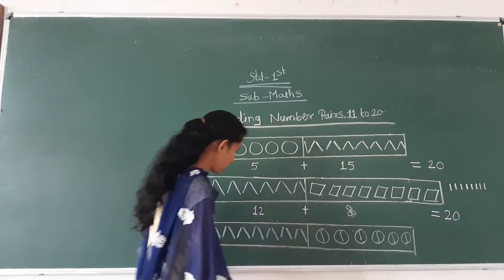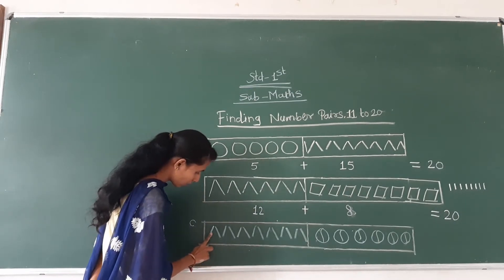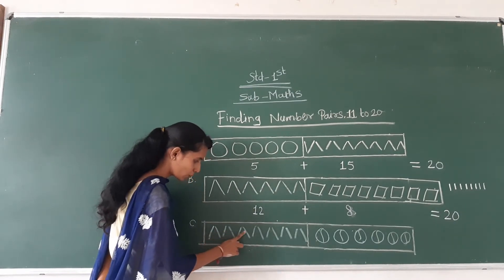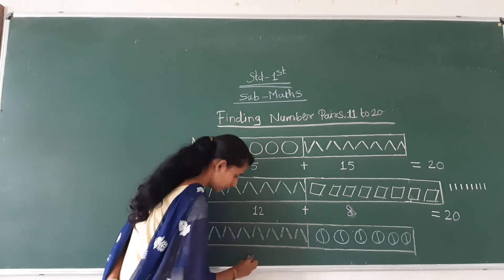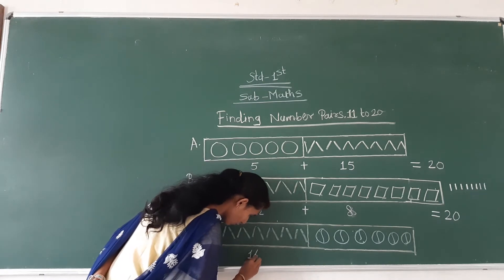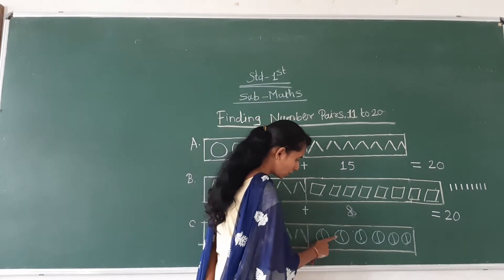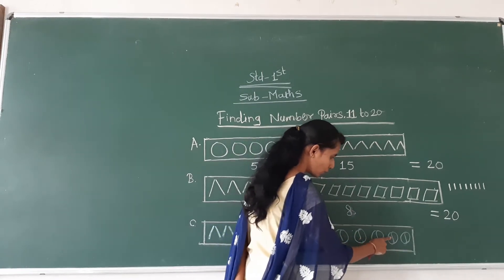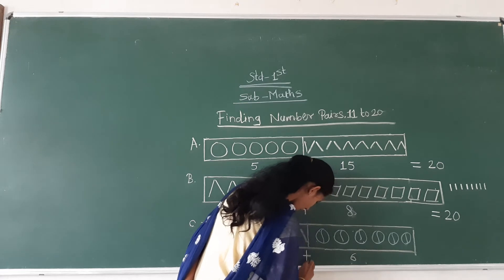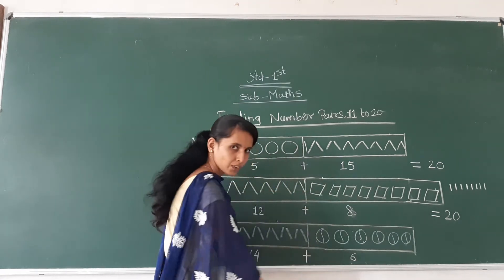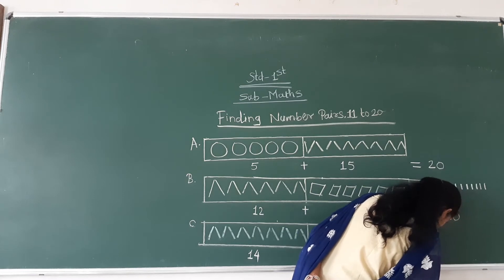Understood? In this last example, how many like here? 1, 2, 3, 4, 5, 6, 7, 8, 9, 10, 11, 12, 13, 14. How many? 14. And here how many? 1, 2, 3, 4, 5, 6. Only 6. Plus, how many? 14 plus 6. How many? 20. Is equal to 20.